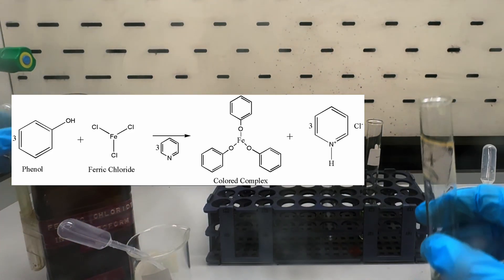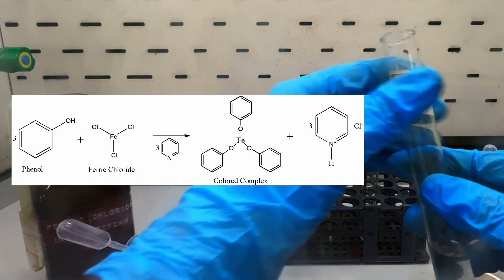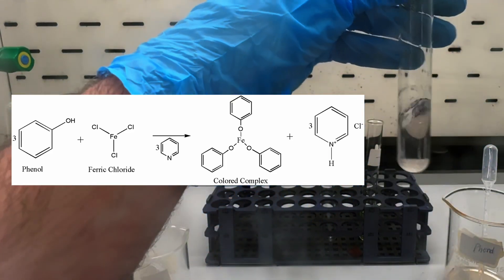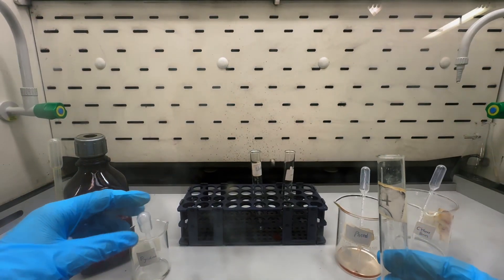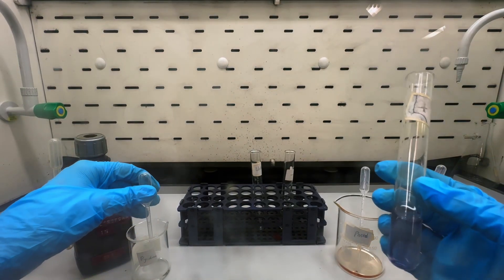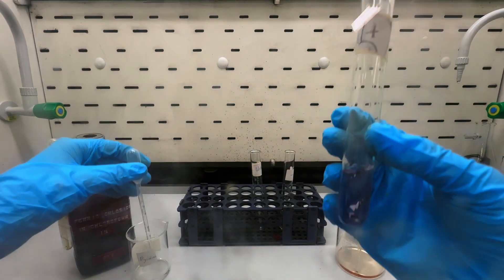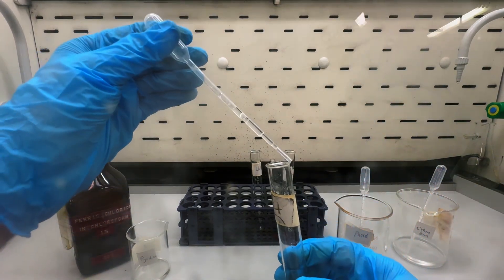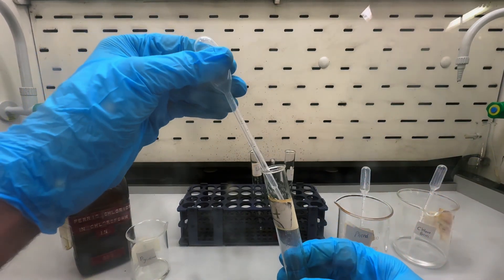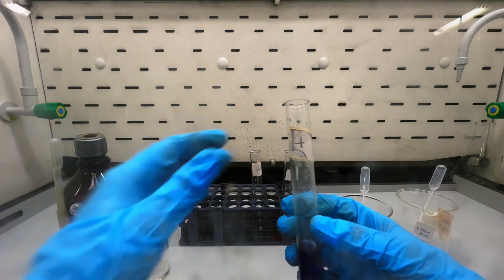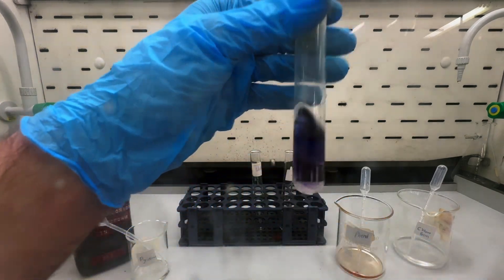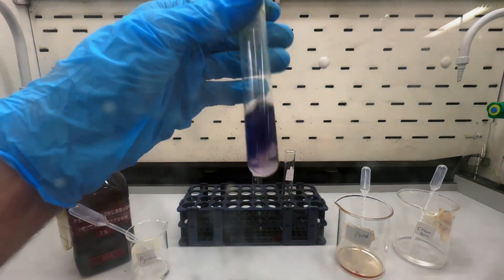The general reaction behind this chemical test is the ferric chloride reacts with 3 phenol molecules, as well as 3 pyridine molecules, to yield the colored complex, usually blue in color when phenols are present, as you can see in the test tube right now.